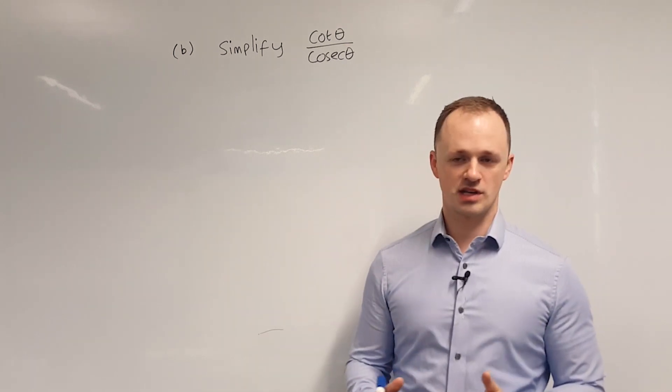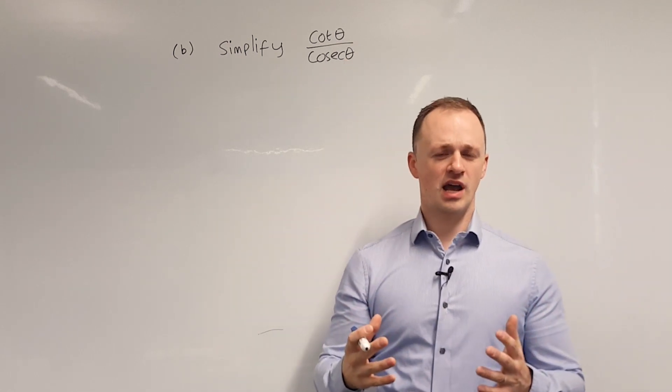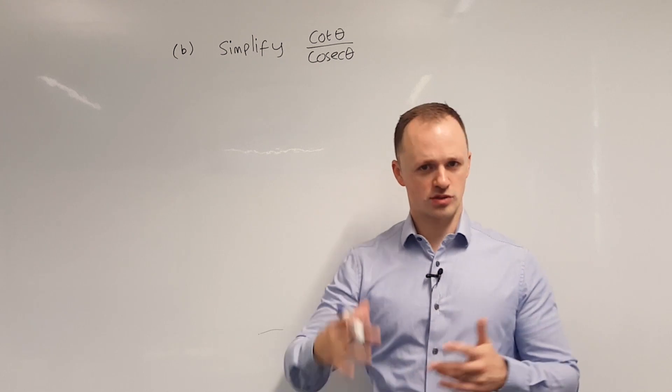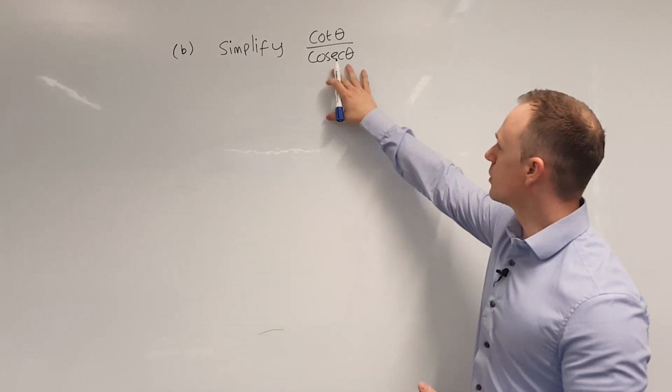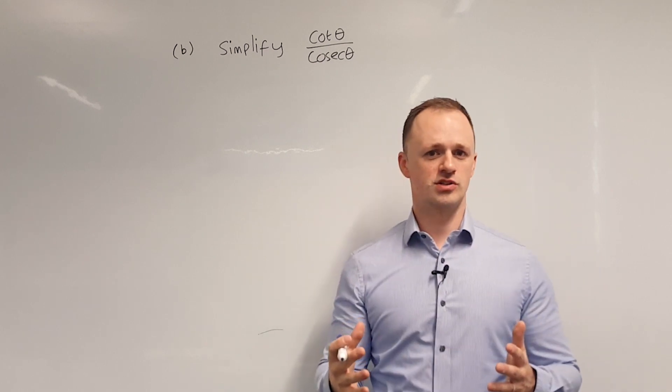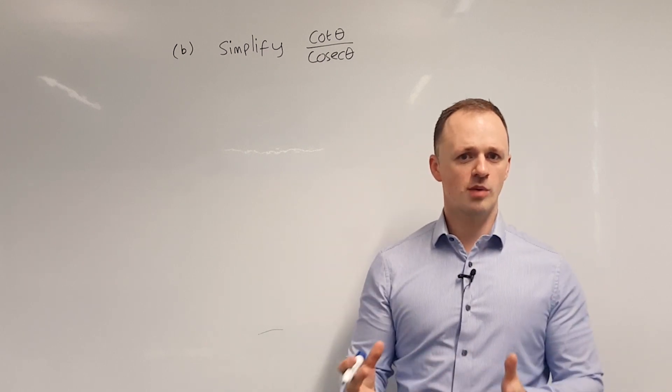The approach I'm going to take this time is that normally we take cosec theta when it's on the top of a fraction and write it as 1 over sin theta. So sin theta ends up on the bottom of the fraction. Similarly if we've got cosec theta on the bottom of a fraction we can rewrite that so that it's sin theta on the top of a fraction.